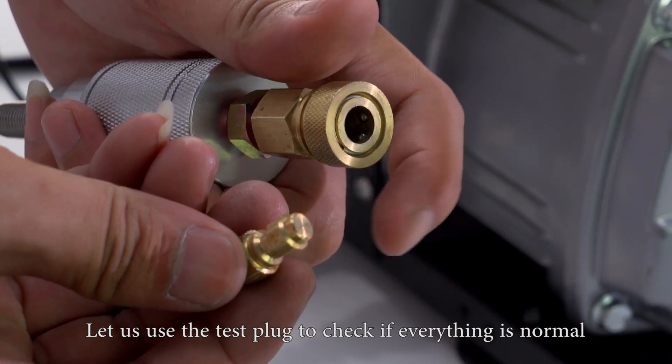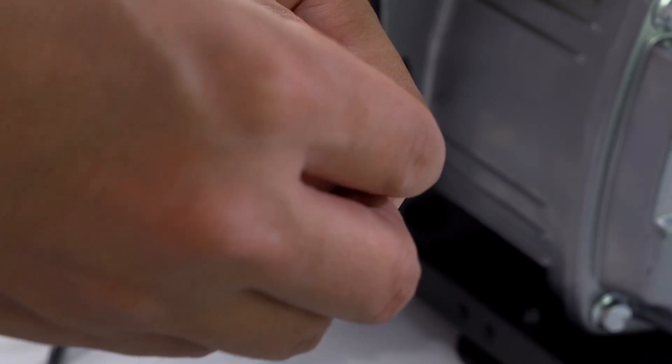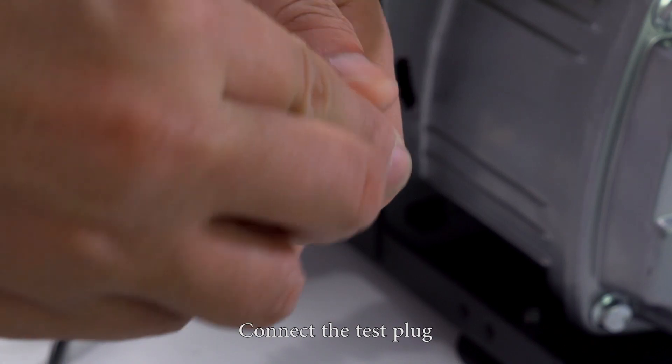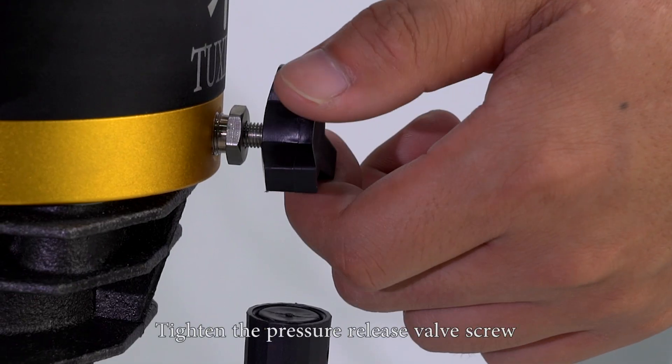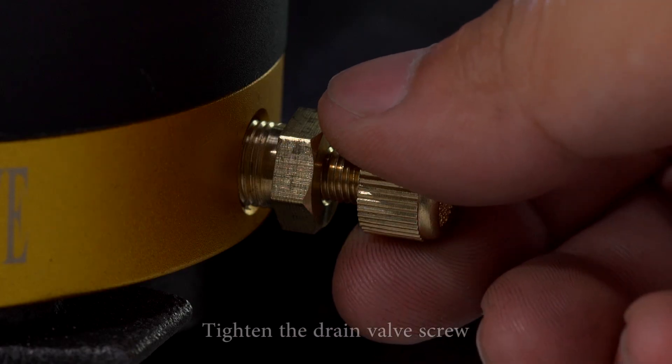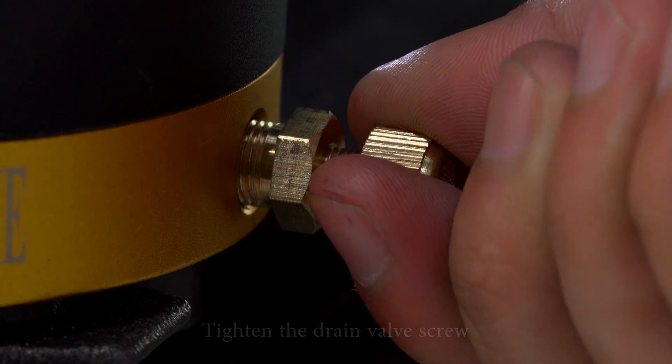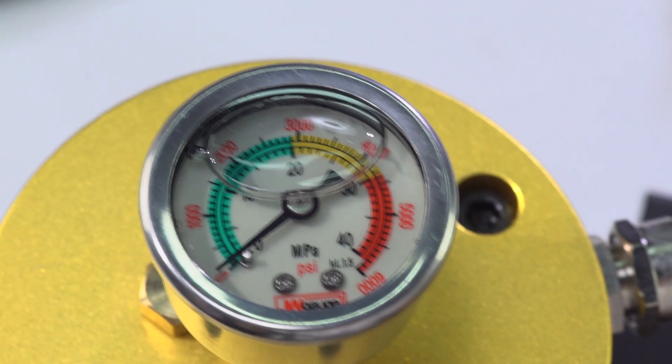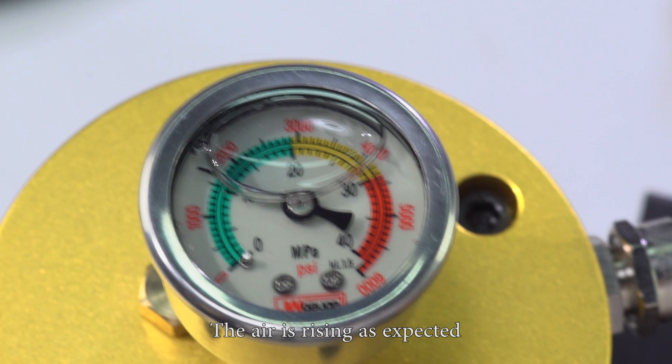Let us use the test plug to check if everything is normal. Connect the test plug. Tighten the pressure release valve screw. Tighten the drain valve screw. Turn on the compressor.